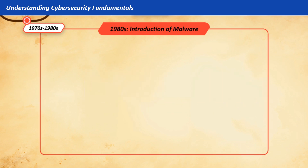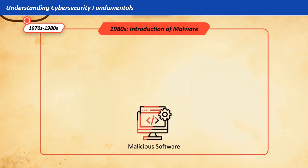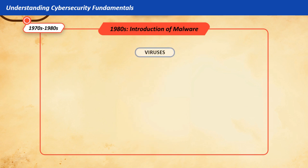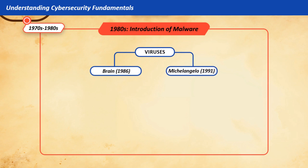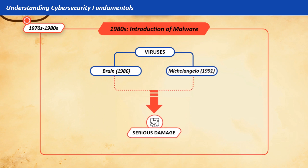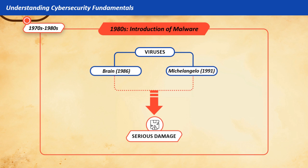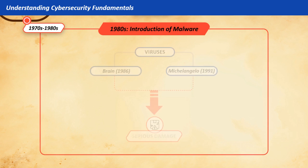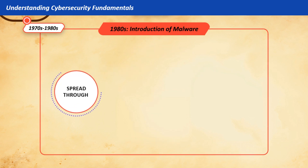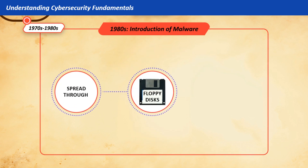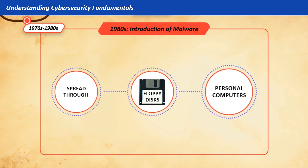1980s — Introduction of Malware. Malicious software became more common, with well-known viruses like Brain (1986) and Michelangelo (1991) causing serious damage. These viruses usually spread through floppy disks and targeted personal computers.